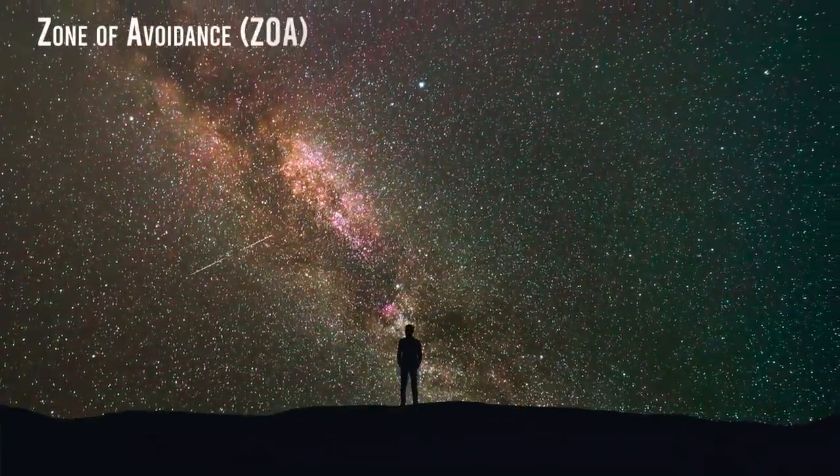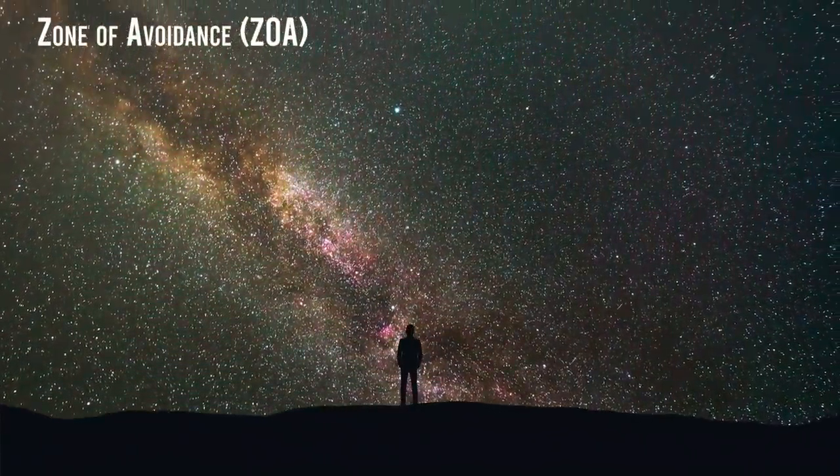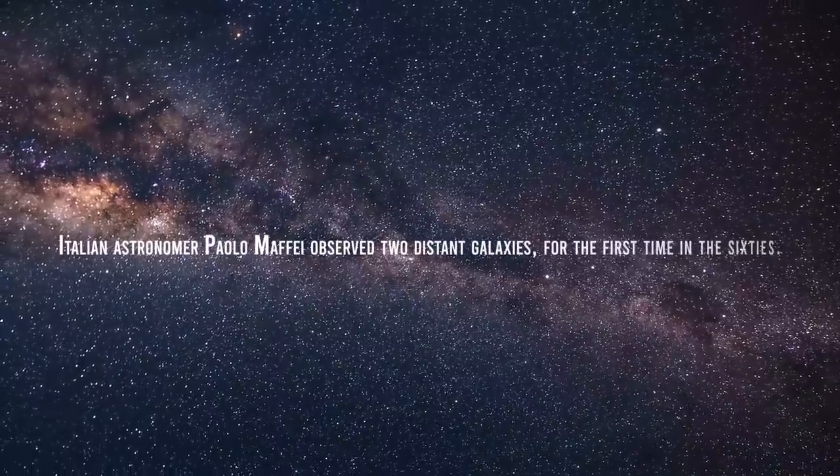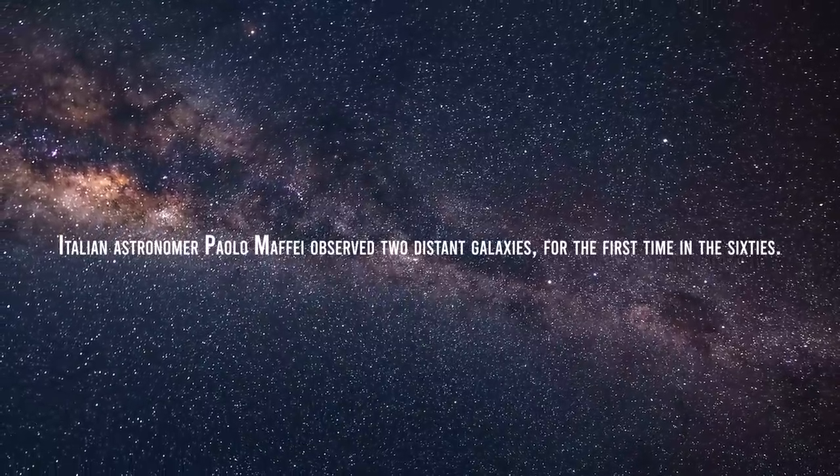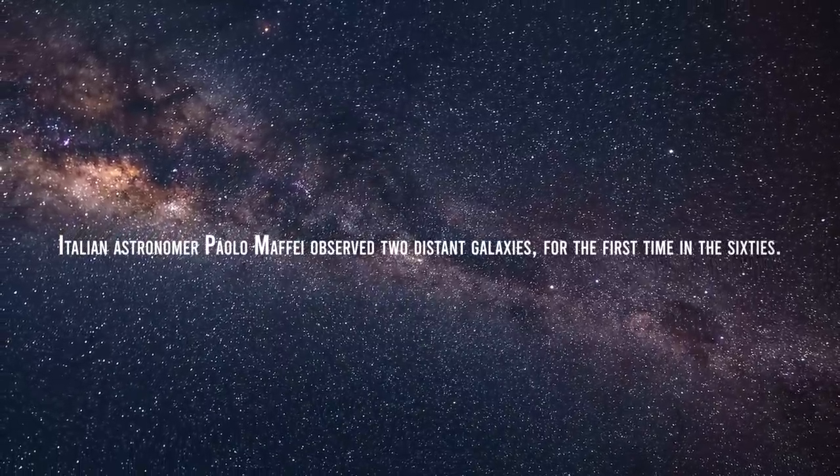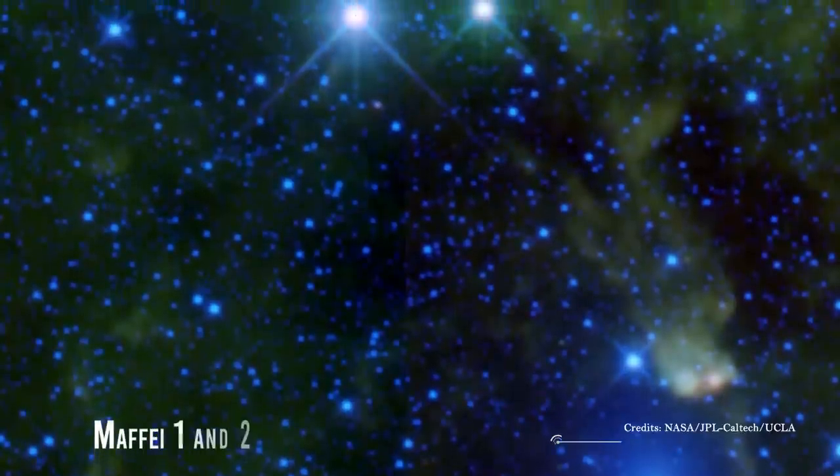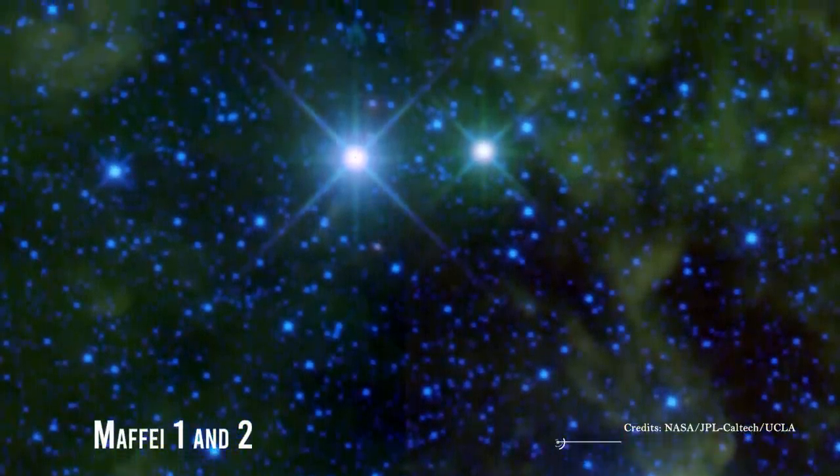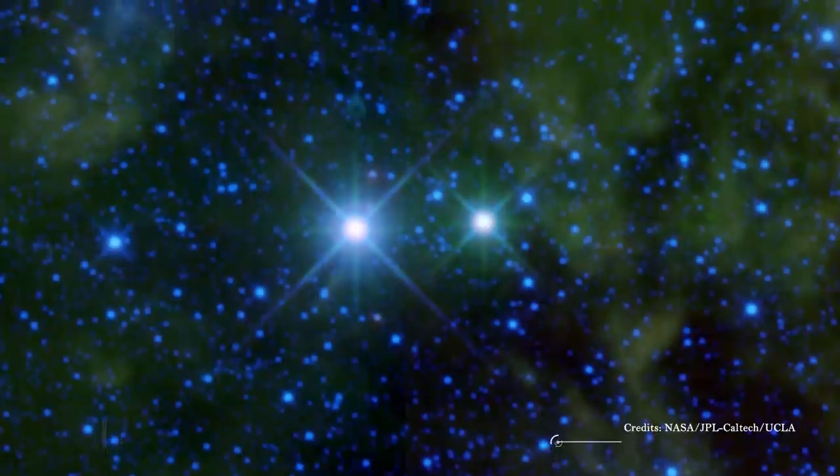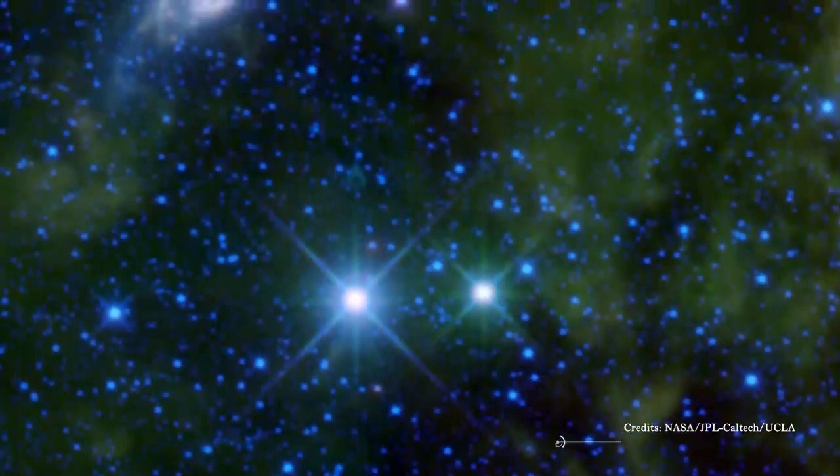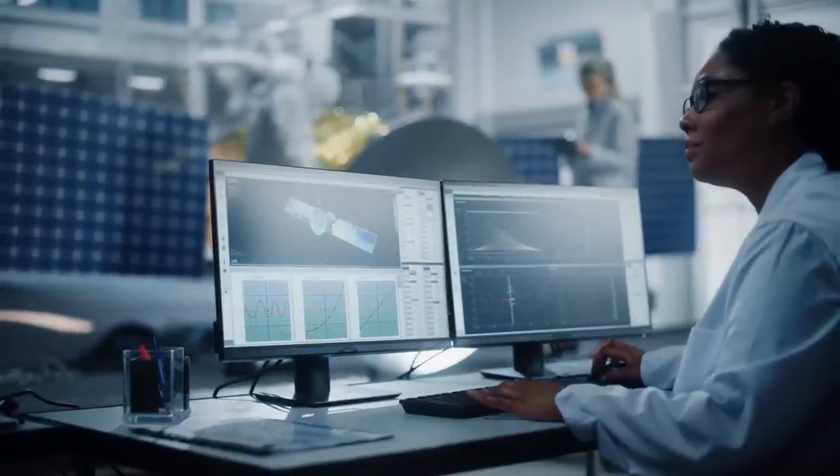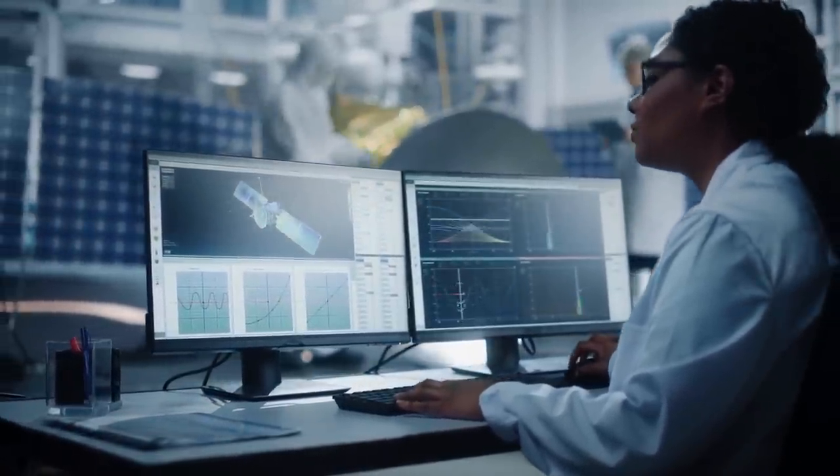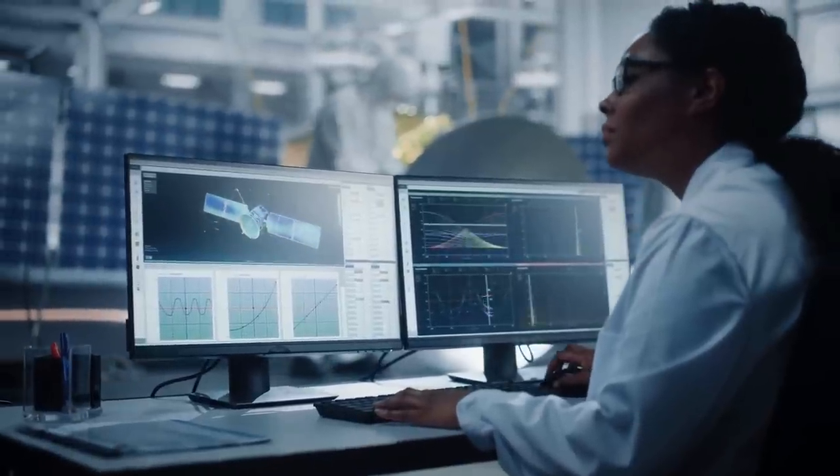In any case, this mysterious object is not the only one we expect to find in the zone of avoidance. For instance, the Italian astronomer Paolo Maffei observed two distant galaxies for the first time in the 60s. They were named Maffei I and II, and they lie near the border between the constellations of Perseus and Cassiopeia. Maffei I is a large elliptical galaxy. Now researchers have combined data from several infrared surveys, and they found the most colossal structure ever detected in the zone of avoidance.